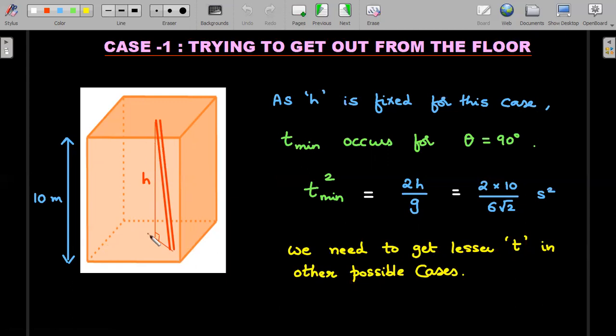Remember one thing, height is fixed. So I'll use the first lesson that I learned in the previous slide. Since height is fixed for this case, t_min would occur for θ = 90°. So among all the tunnels that you can dig to come out from the floor, the straight tunnel that which is exactly vertical would be the least possible time.